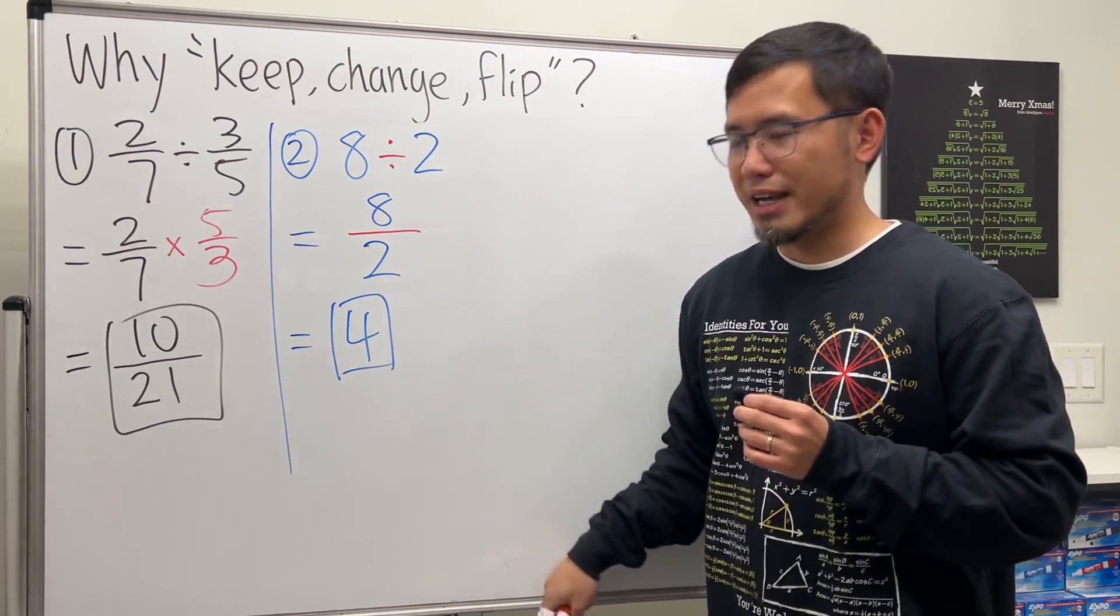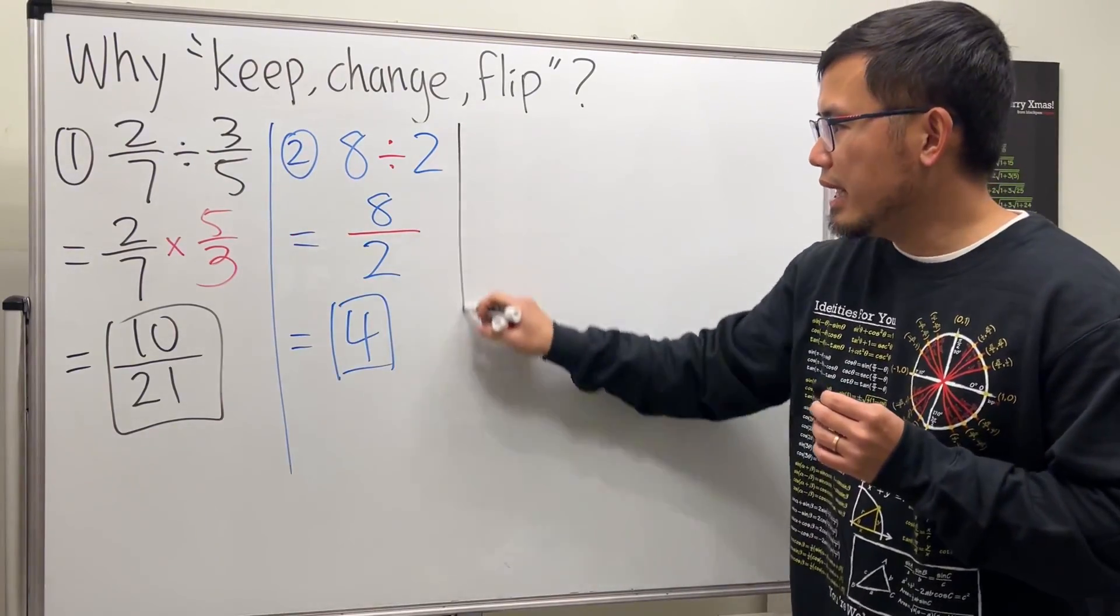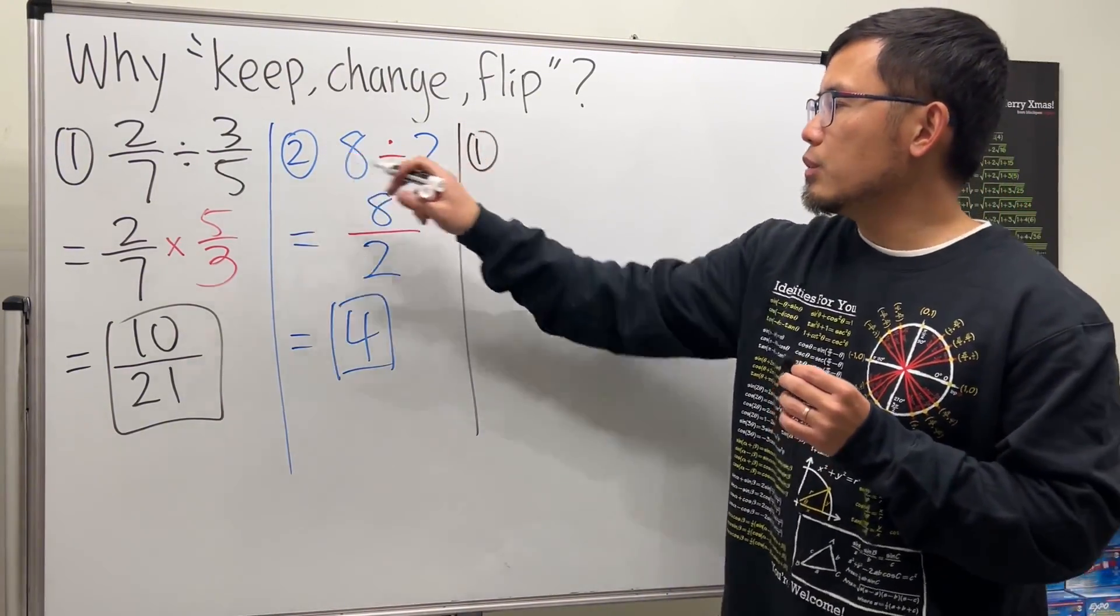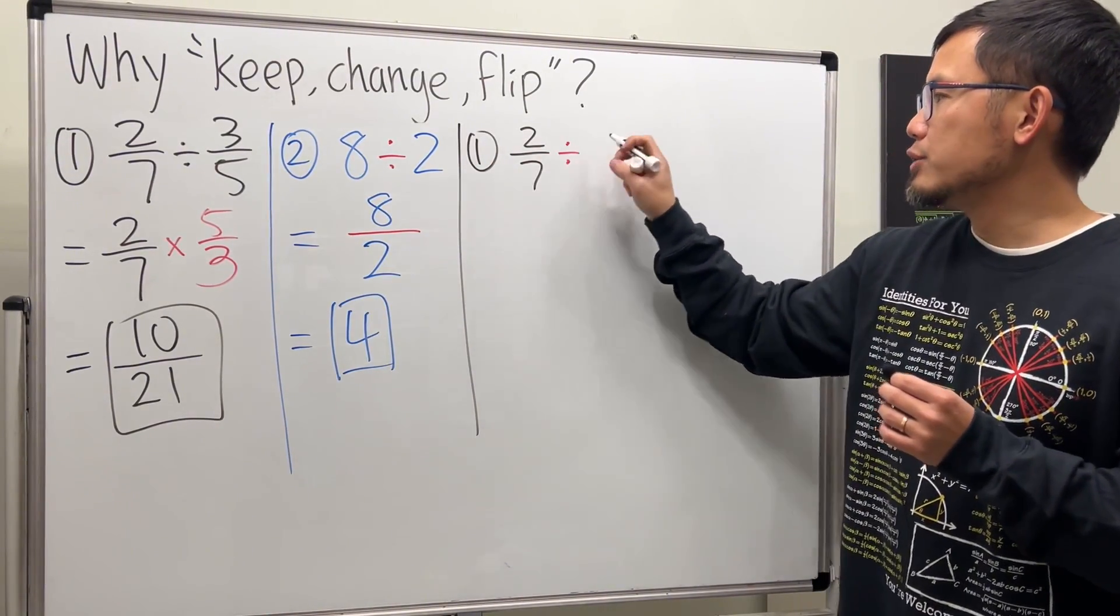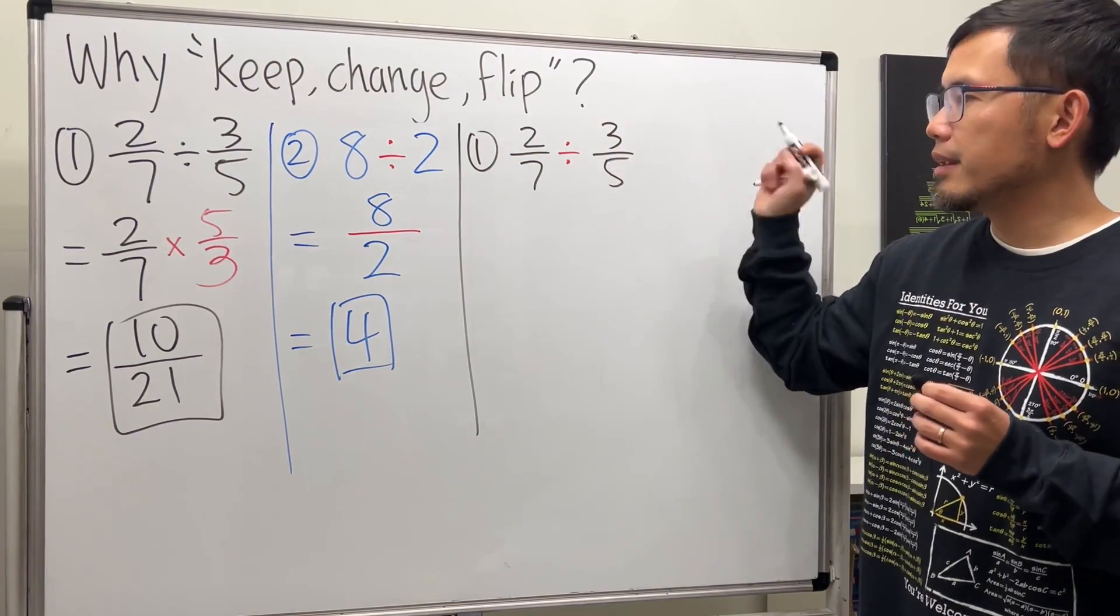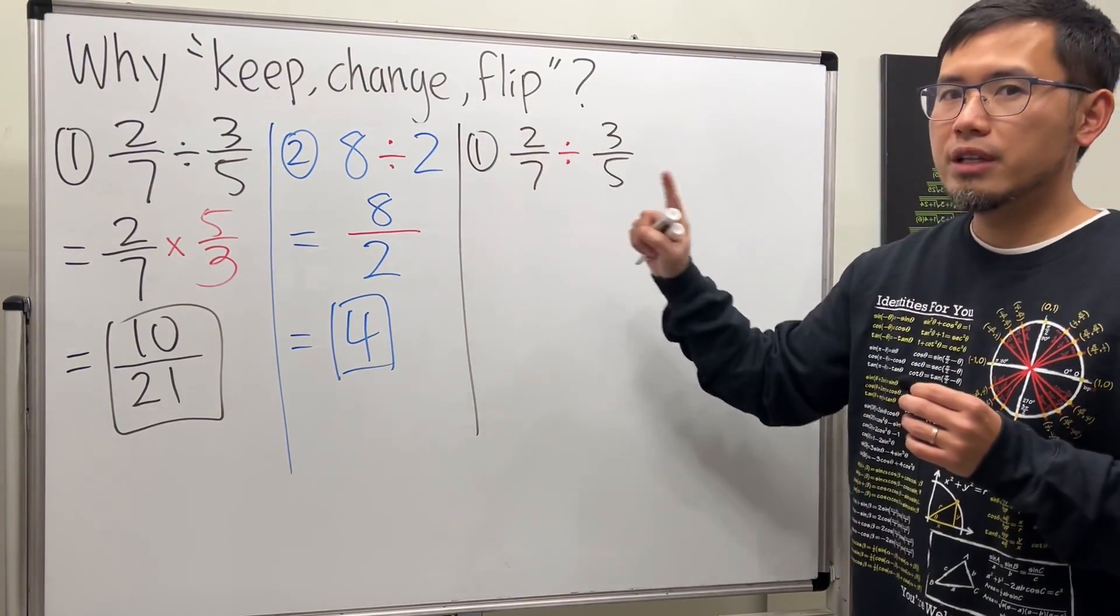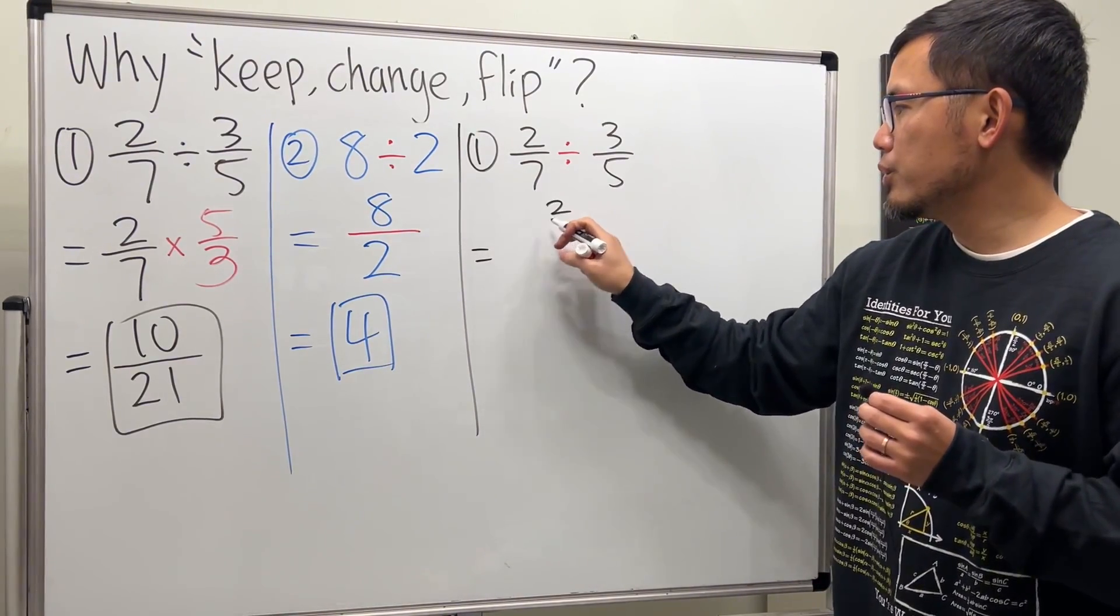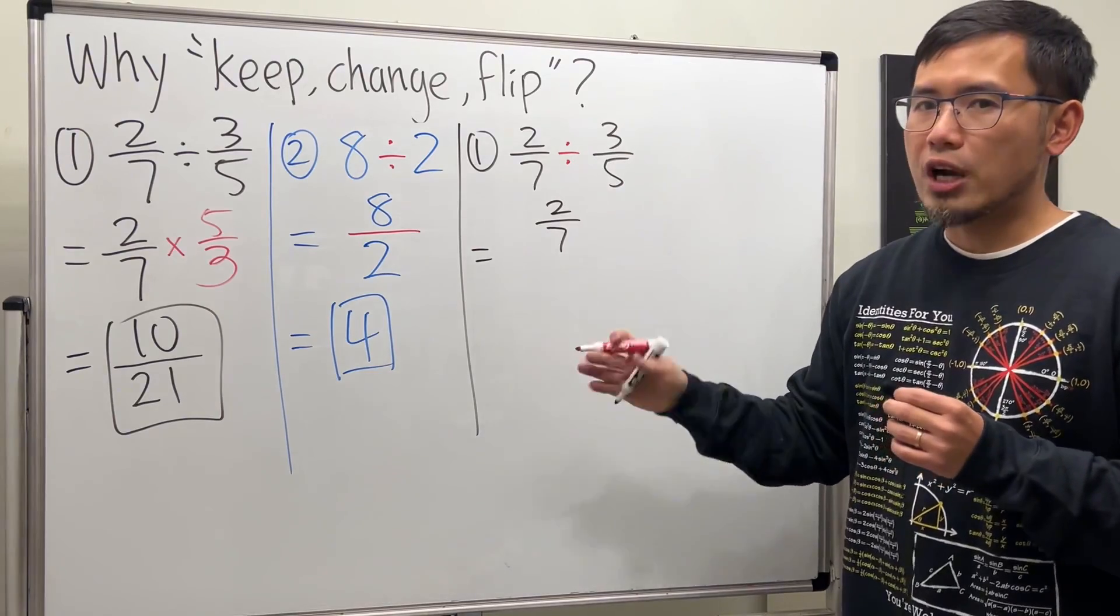But keep this in mind. Because now, let's go back to number 1 and use the same idea. So, we have 2 over 7 divided by 3 over 5. By this, we are going to keep the first fraction on the top. So, this right here becomes 2 over 7.